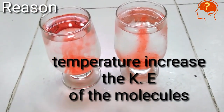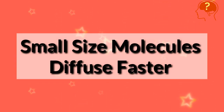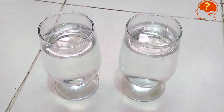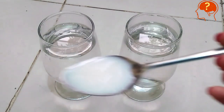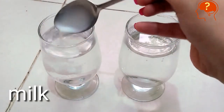The second important factor is the size of molecules. Small size molecules diffuse faster than big size molecules. Let's prove this. Here I am using normal tap water in two glasses, and I am going to add one tablespoon of milk in one glass.